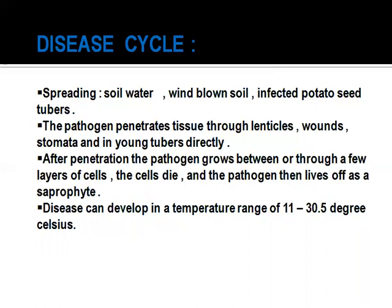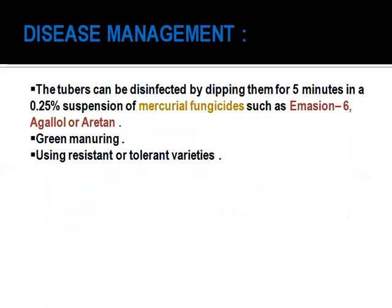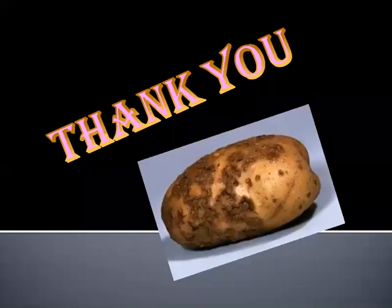The disease develops at temperatures of about 11 to 30.5 degrees centigrade. For management, tubers can be disinfected by dipping them for five minutes in a 0.25% suspension of mercurial fungicides such as Emisan 6, Agallol, or Aretan. Green manure is also suggested. Using resistant and tolerant varieties is useful for protecting against this disease.